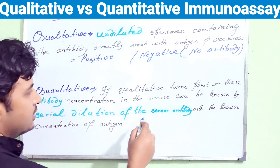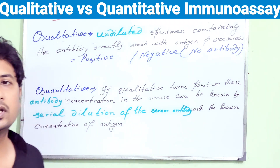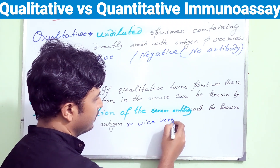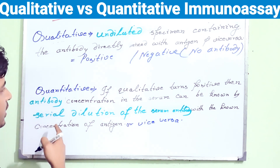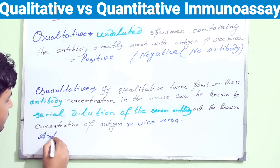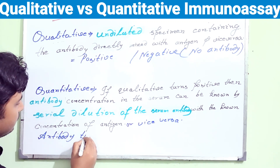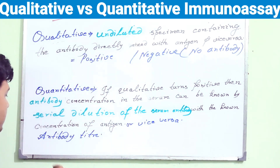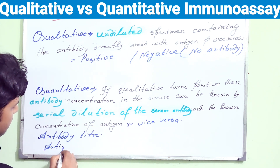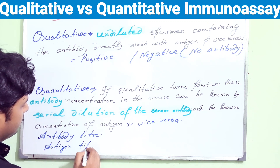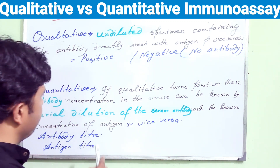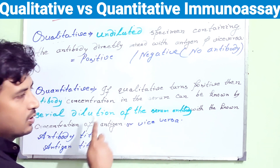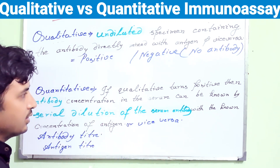Antibody concentration in the serum can be known by serial dilution of the serum antibody against a known concentration of antigen, or vice versa. If we want to know the antibody concentration, we search for the antibody titer. If we want to know the antigen concentration, we go for the antigen titer. For antibody titer, the patient's serum is serially diluted against a known concentration of antigen, and for antigen titer, the opposite applies.